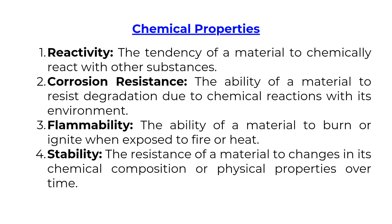Chemical properties include: Reactivity — the tendency of a material to chemically react with other substances. Corrosion resistance — the ability of a material to resist degradation due to chemical reactions with its environment. Flammability — the ability of a material to burn or ignite when exposed to fire or heat. Stability — the resistance of a material to changes in its chemical composition or physical properties over time.